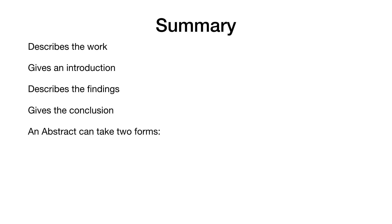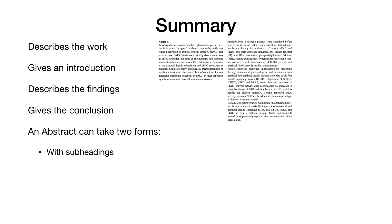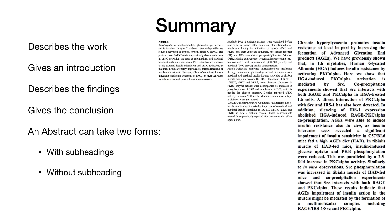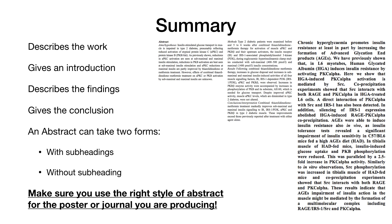Abstracts can be written in two forms: one with subheadings, and another where there are no subheadings. But it still has this defined structure of introduction, methods, results, discussion and conclusions. It's also very important that you make sure you're using the right style of abstract for the type of work you're doing. This is normally laid out in the brief for the particular work, be it a submission to a journal or a submission of a poster to a conference.